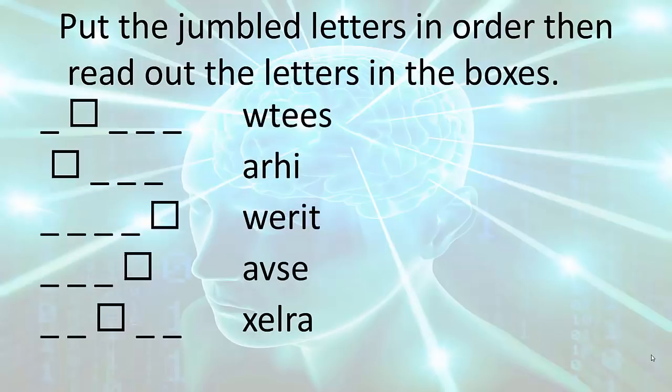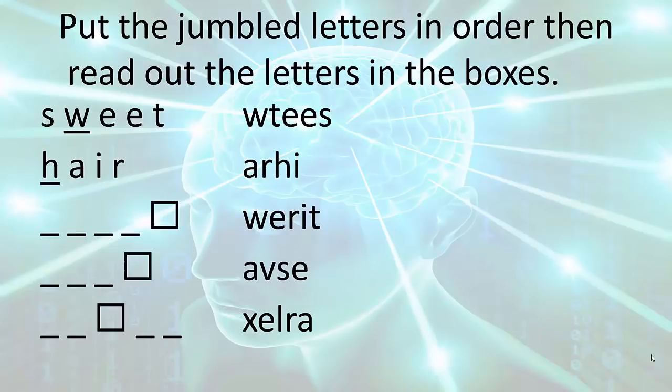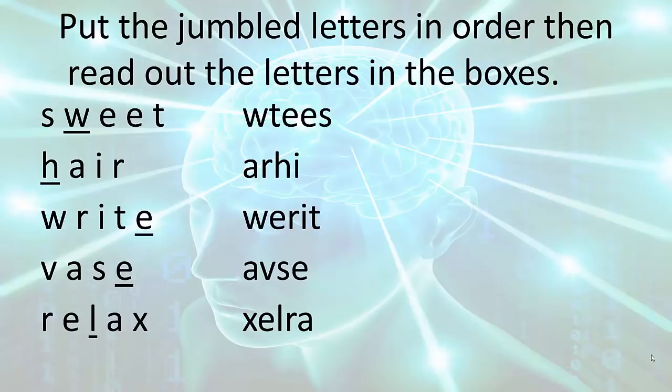Let's continue. The first word is sweet. The next word is hair. The third word is right. And we see the letters are starting to form. W, h, e. The next word is vase. And the last word is relax. And the hidden word is w, h, e, e, l. Wheel.